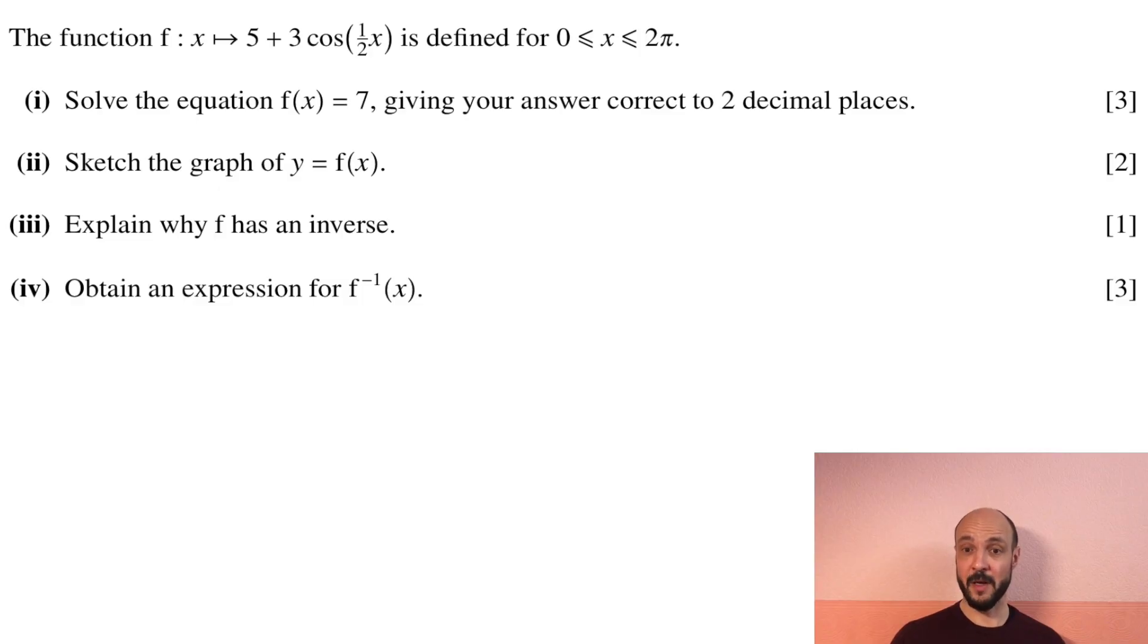I'll start by reading carefully through the question. The function f goes from x to 5 plus 3 cosine of half of x is defined for 0 is less than or equal to x is less than or equal to 2π.